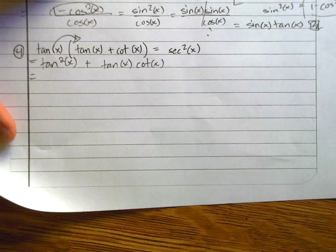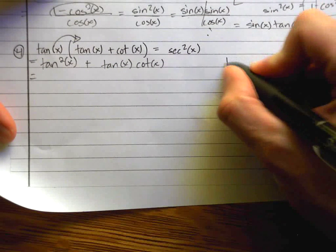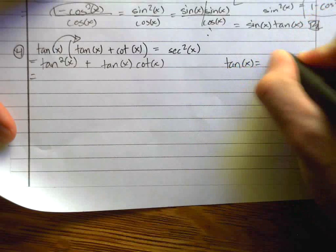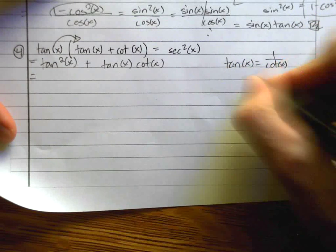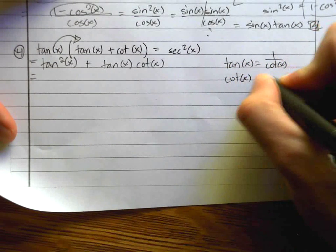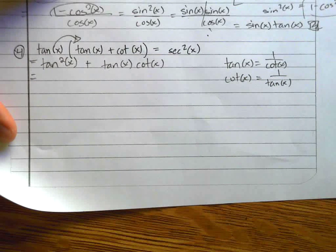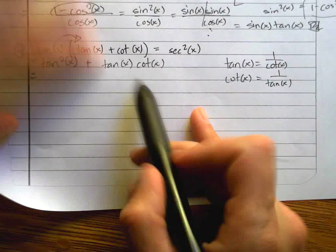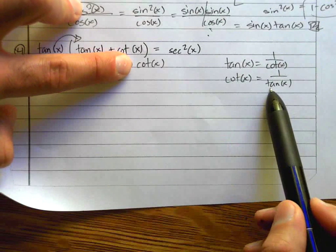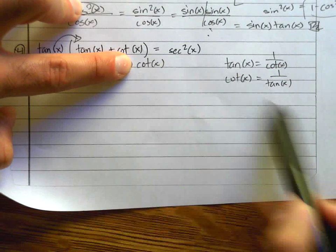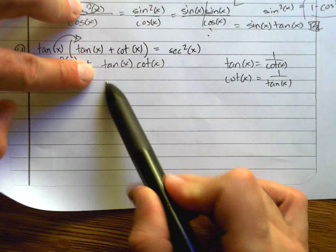Now I need to know that tangent is the same thing as 1 over cotangent, and cotangent is the same thing as 1 over tangent. I need to know that. So if I replaced cotangent with 1 over tangent, so replacing this with 1 over tangent, it would be tangent over tangent, which is 1.